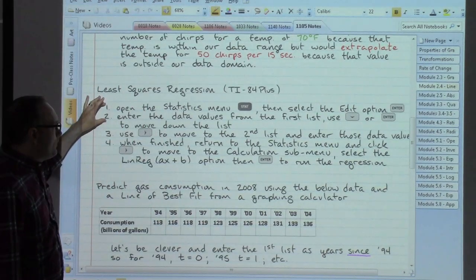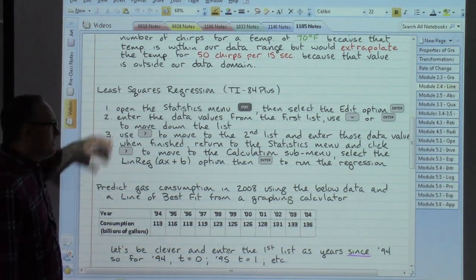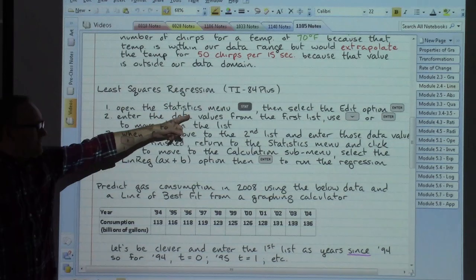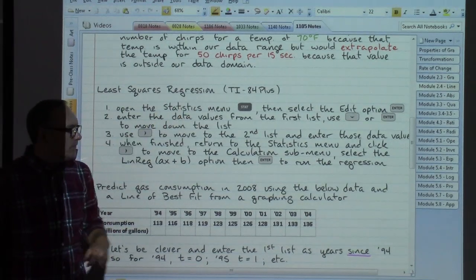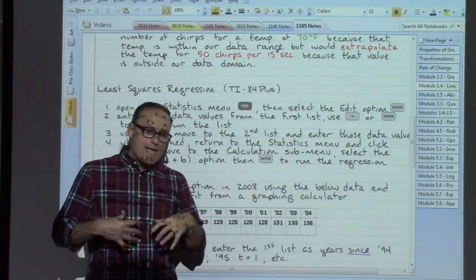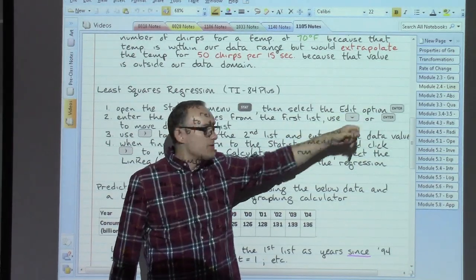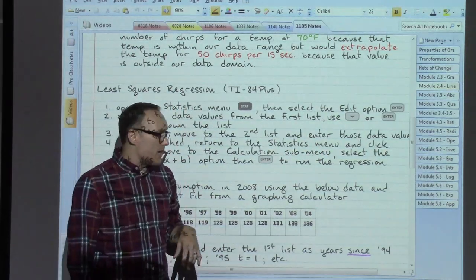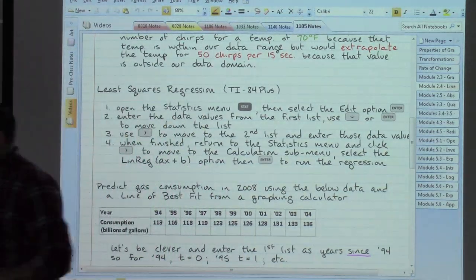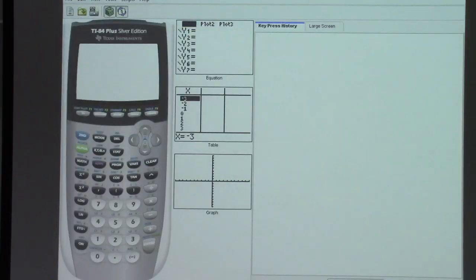The first couple of steps here tell us how we're going to enter that collection of data values. Actually, it's the first three steps really. We're going to open the statistics menu. We're going to look for a button that is labeled STAT. When that opens up, we are going to have an edit option that appears. That is going to be the very first option that appears. So we can just go ahead and hit enter on that. Let me show you what that looks like on the graphing calculator here.